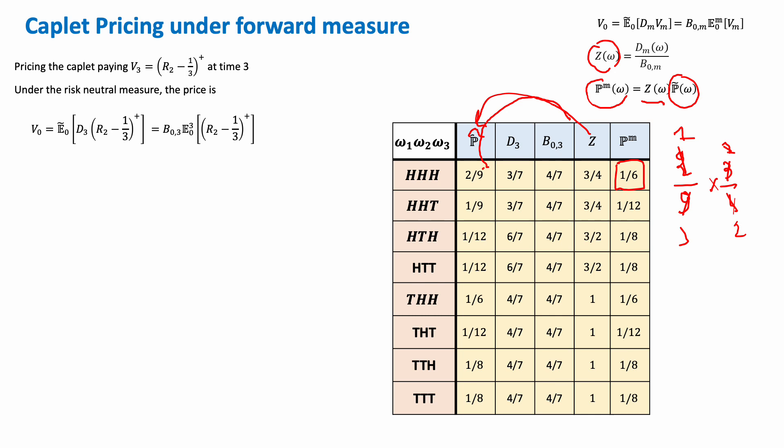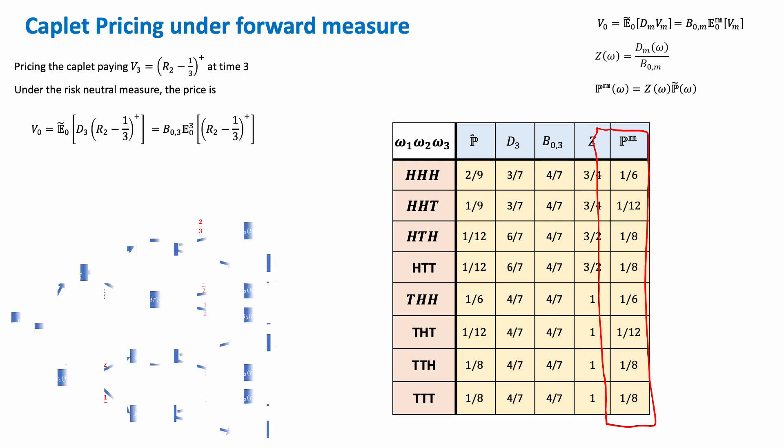So it makes sense what we have here. And this 1 over 8 is nothing but this 1 multiplied by this 1 over 8 here. So that's how we get to move from, that's how we get to generate these probabilities in the forward measure. Okay. Now we have our forward measure.